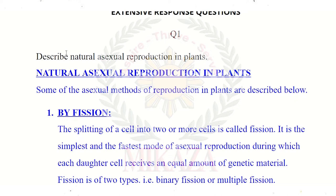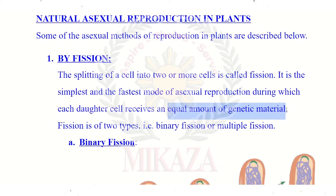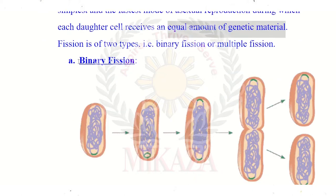For natural reproduction in plants, the first method is fission. Fission is when cells split — this is one of the fastest and simplest methods of reproduction. In this process, genetic material is equally divided. The first type is binary fission, where one cell divides into two parts, and each part has an equal amount of genetic material.